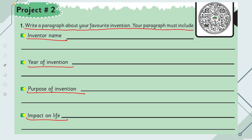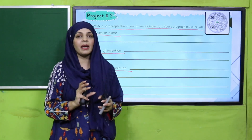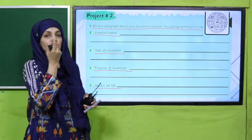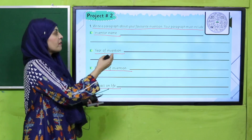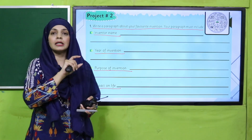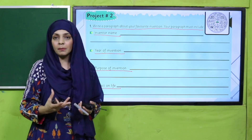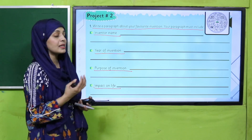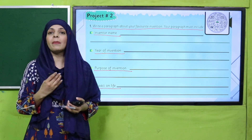You need to write a paragraph about any favorite invention, whether it exists today or not. Your paragraph should include the invention's name — 'My favorite invention is dash' — who invented it, the year it was invented, what its purpose was, and what impact it has had on your life.